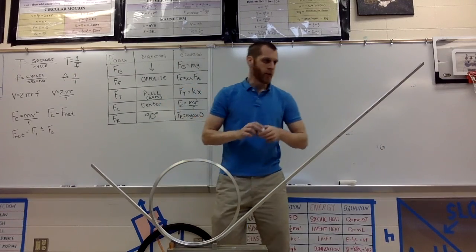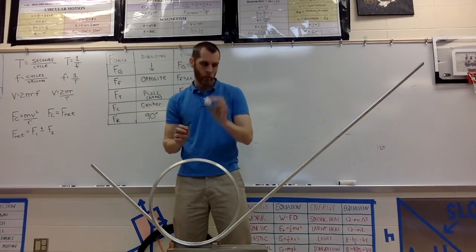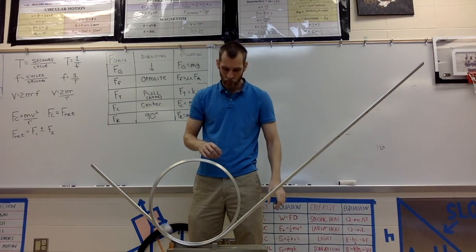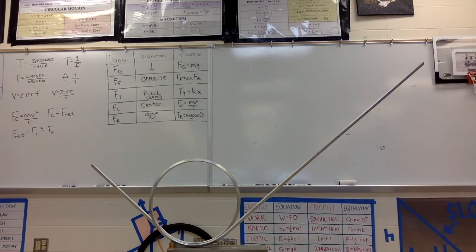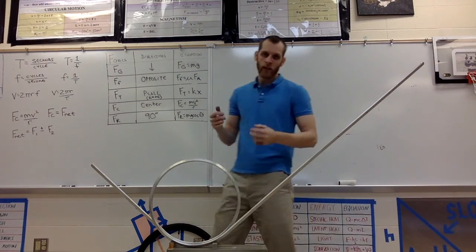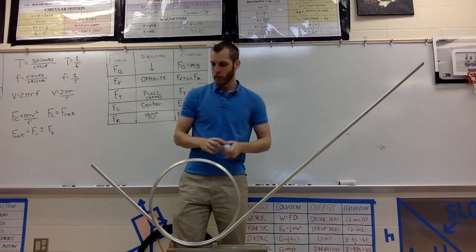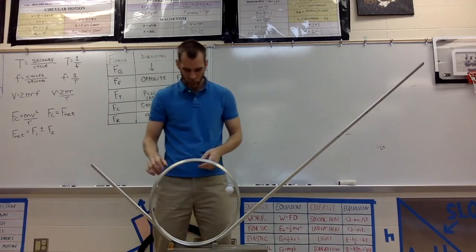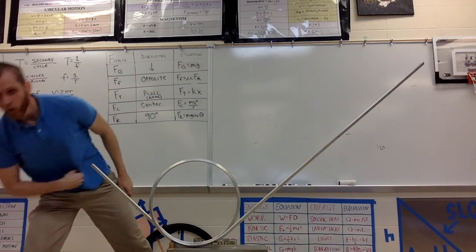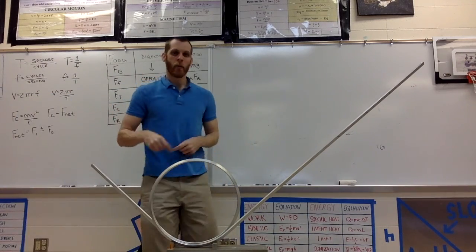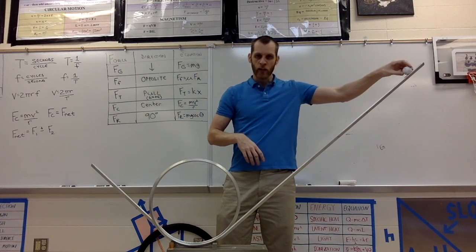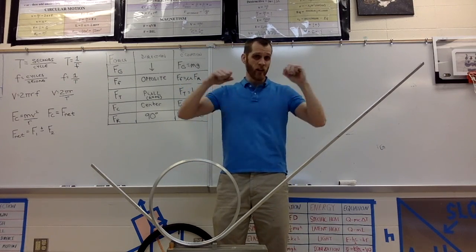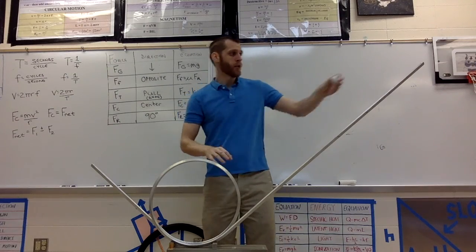Now let's try one with a loop-de-loop. If I take this golf ball and put it on this hill, it didn't have enough momentum to make it around the loop. If the ball starts high enough, its potential energy converts into kinetic energy, giving it enough speed and momentum to make it around the loop.